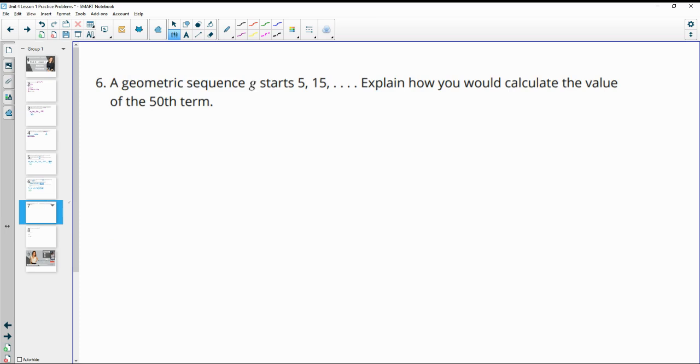Number six: a geometric sequence G starts with 5 and then 15. How would you calculate the 50th term? So remember geometric sequence means that we're multiplying by a common factor. So we know that we're looking at multiplication here versus addition. So 5 times 3 gets us to 15.